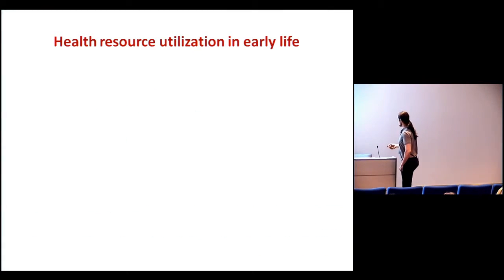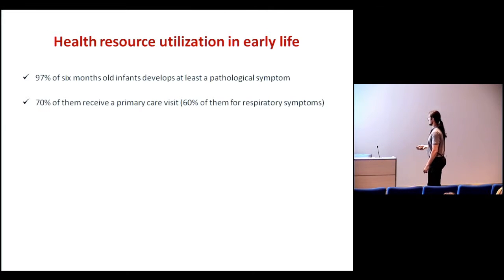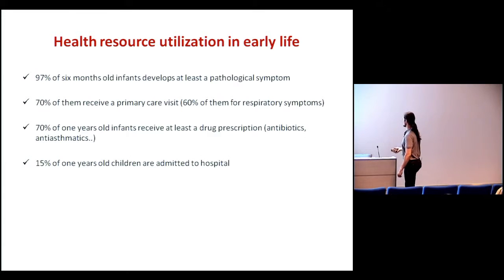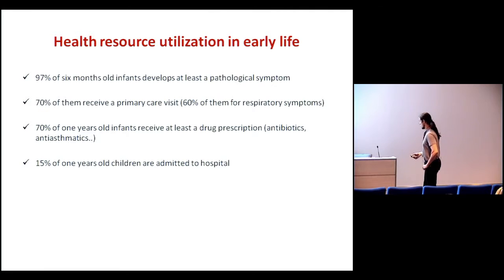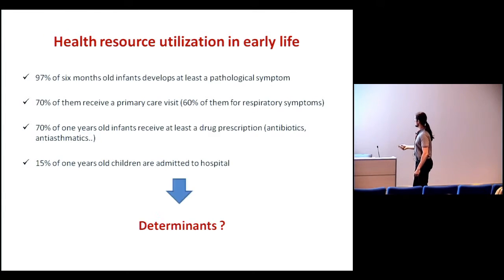If we look at health resource utilization in early life, within the first six months of age, infants develop at least pathological symptoms, and 70% of them receive a primary care visit, mostly for respiratory symptoms. About 70% of them receive at least one drug prescription within the first year of life, and 50% of them are hospitalized. But what are the determinants of this health resource utilization?